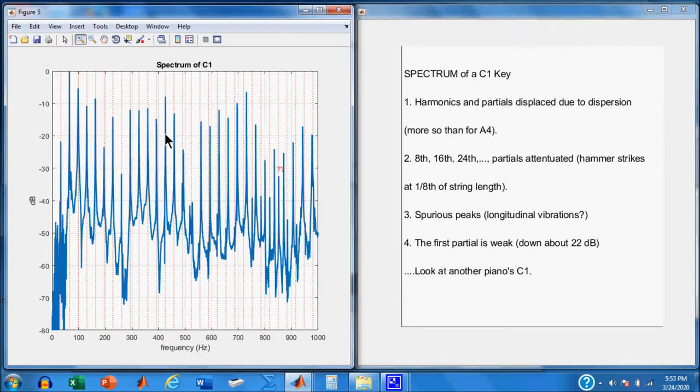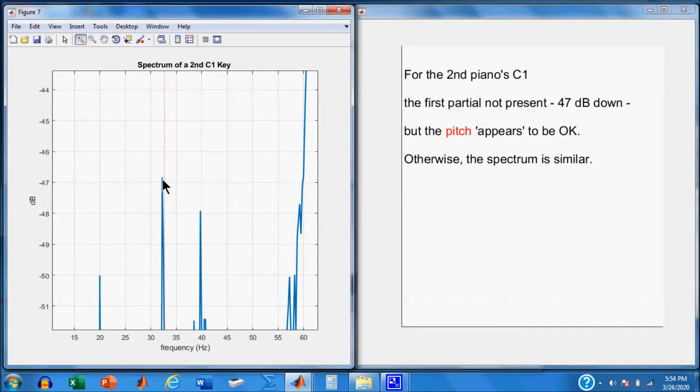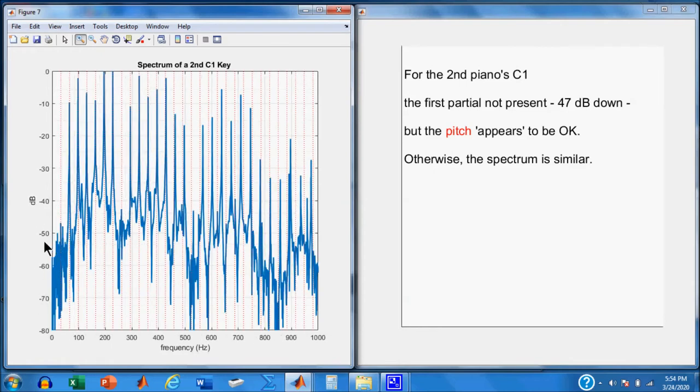Okay, now, I'm interested in this first partial being so weak, even though the pitch appears to be around 32.7 hertz. So let's look at another piano, and it's C1. Sounds similar pitch-wise, color-wise, but you see this first partial is down in the mud. It's basically, let's take a look at it, 47 dB down, if in fact this is the first partial. Because there's so many things going on down here. It's mud, it's low in power. So effectively, I would say that the first partial is not present.